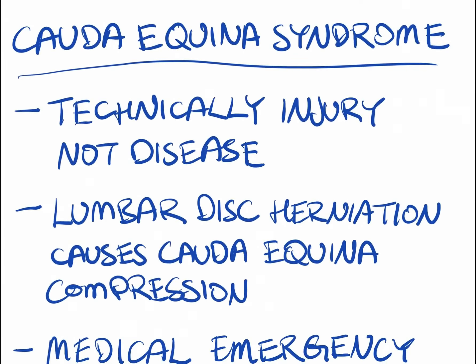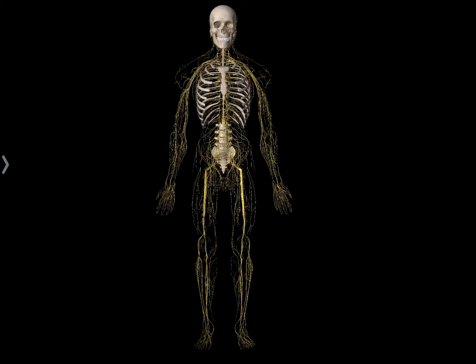The thing I want to cover today is known as cauda equina syndrome. Cauda equina basically means the horse's tail, and in a second we'll know why it's called that. This is actually an injury and not a disease. It's caused by a lumbar disc herniation — specifically a lower lumbar disc herniation, because the higher levels are where the spinal cord is, while at the lower levels there is no cord.